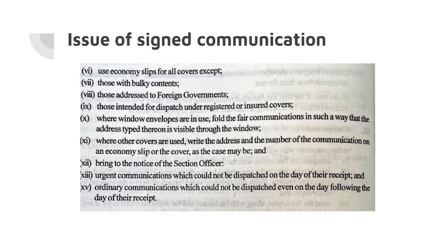Exceptions also include those intended for dispatch under registered or insured covers. Where window envelopes are in use, fold the fair communications in such a way that the address typed thereon is visible through the window. Where other covers are used, write the address and the number of the communication on an economy slip or the cover, as the case may be, and bring to the notice of the Section Officer urgent communications which could not be dispatched on the day of their receipt and ordinary communications which could not be dispatched even on the day following.